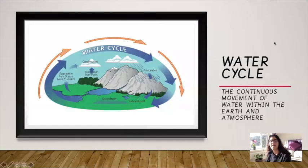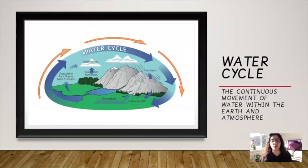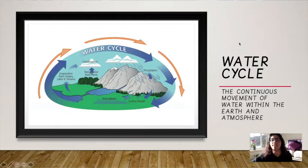Let us begin by defining these key words. The first one is my turn, water cycle. Now water cycle is the continuous movement of water within the earth and atmosphere so when I say continuous that means that it keeps going on and on and on.